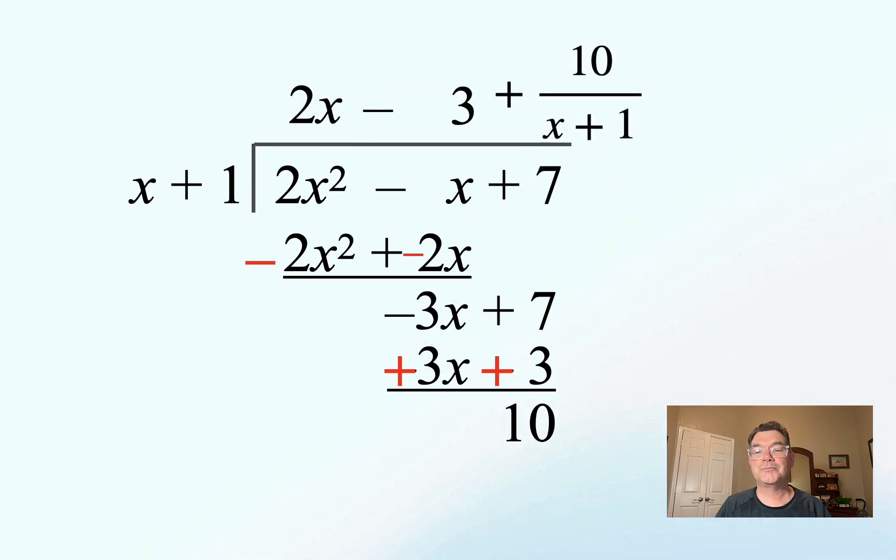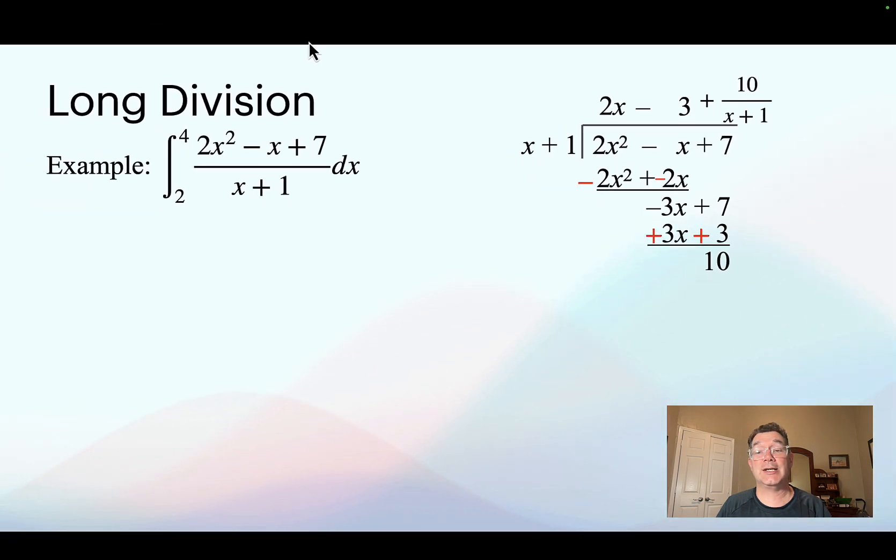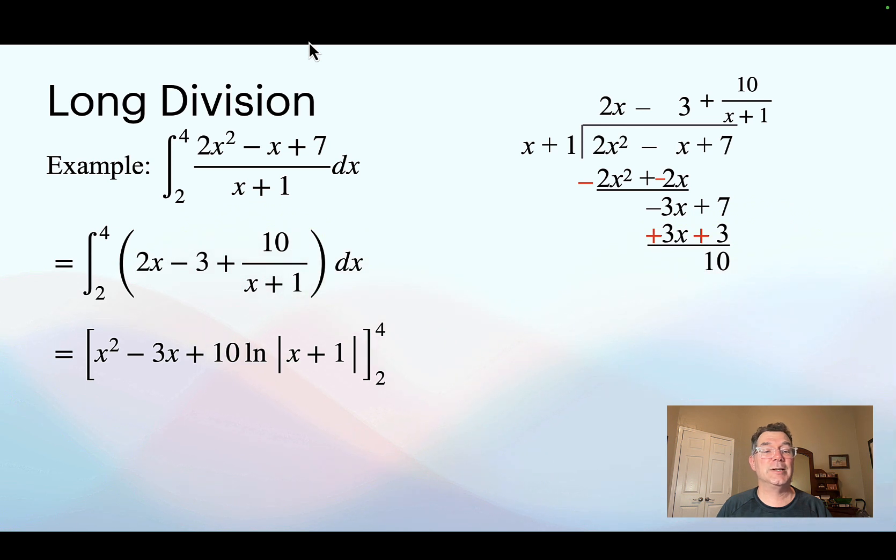And so at the end, I've got 10 over x plus 1. So I'm going to rewrite this question as 2x minus 3 plus 10 over x plus 1. And I'm going to find the antiderivative. That's going to be x squared minus 3x plus 10 times the natural log of x plus 1.